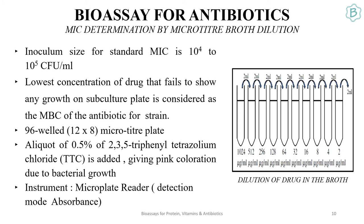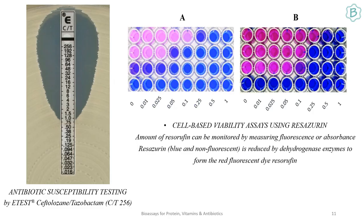A solution giving no pink coloration represents the bactericidal concentration of antibiotics. The left-hand diagram shows a commercially available E-test, which is a strip with a gradual increasing concentration of antibiotics. The strip is used for antibiotic susceptibility testing — after placing the strip on an actively growing bacterial culture on an agar plate, a zone of inhibition in the form of an ellipse is seen. The corresponding point at the narrowest portion of the ellipse gives you the minimum inhibitory concentration (MIC).